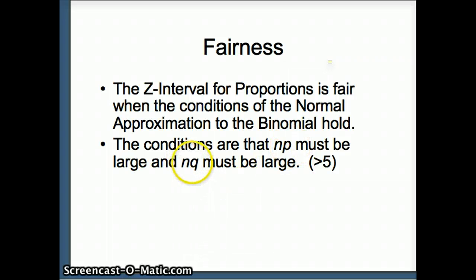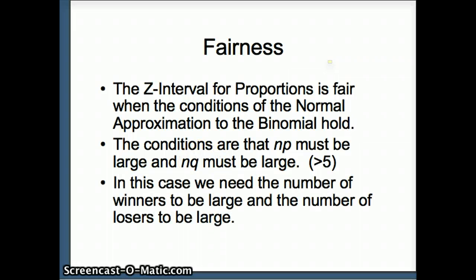Similarly, n is the number of trials and q is the probability of failure on a given trial, so nq is the total number of failures. We need the number of successes or the total number of winners to be large, and we need the total number of losers or failures to be large. If that happens then it is fair for us to use the z-interval for proportions.